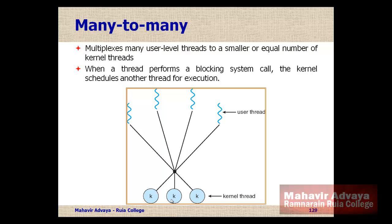This is how multithreading models are used in modern operating systems to increase multiprogramming and system efficiency. Today's modern operating systems are developed with the multithreading feature, including how the multithreading model can be implemented for multiprocessor systems. In the next video we will see various threading issues — what issues threads face and how these issues are managed by the operating system.